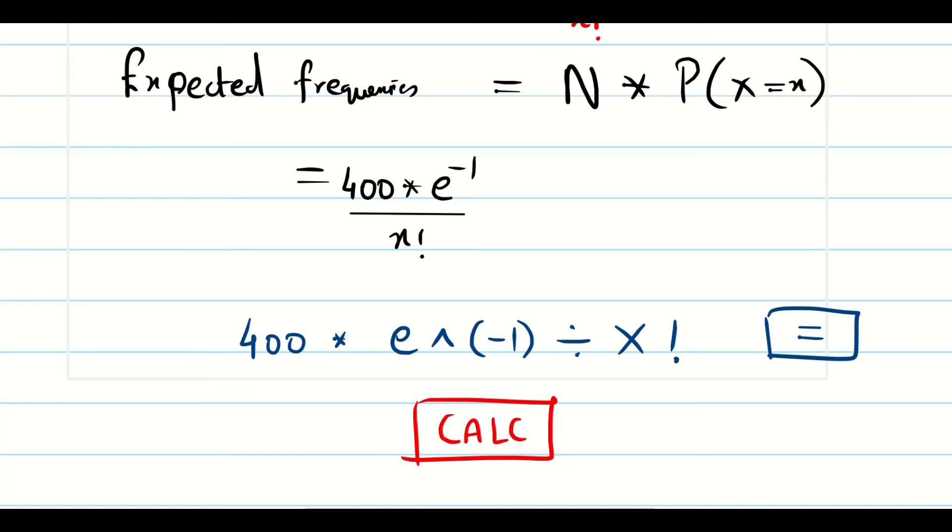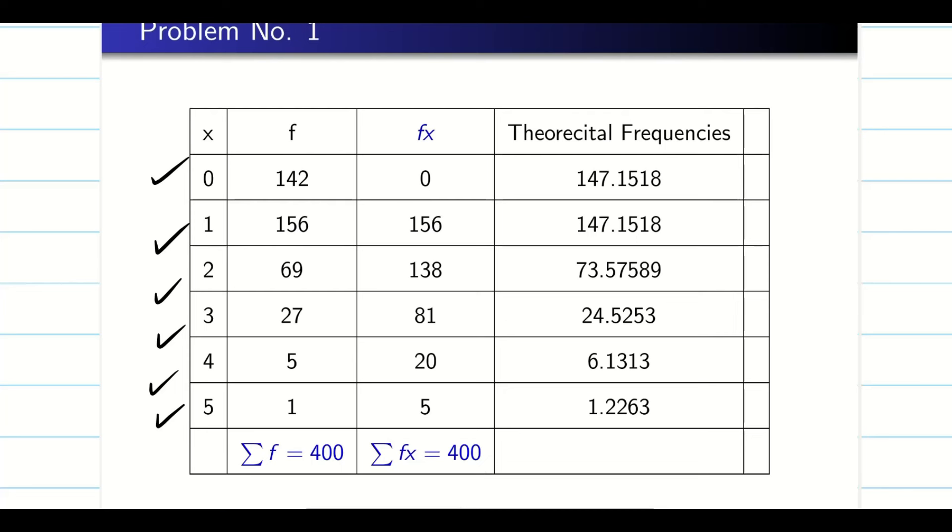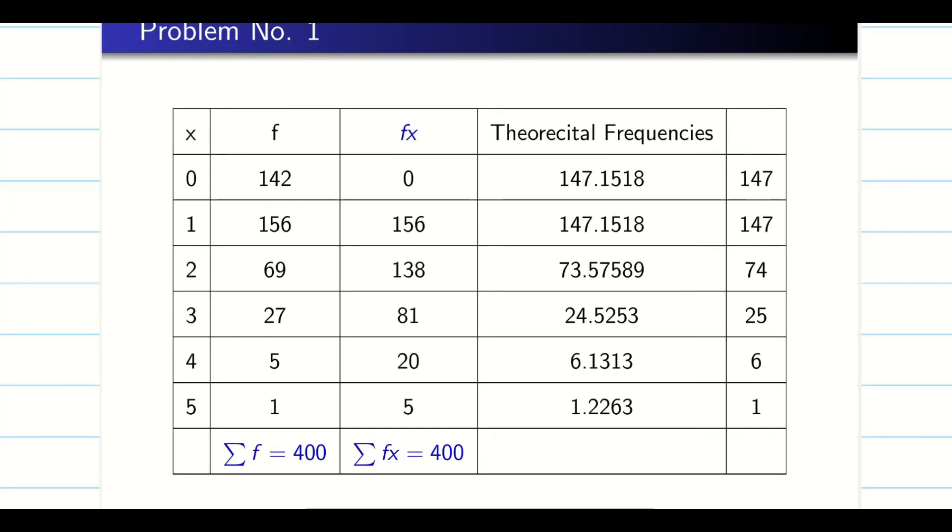Press calc. Then it will start asking the value as usual. So now you can finish this. Enter the values 0 to 5 one by one and enter the corresponding theoretical frequencies. As usual, the final step, what you do? You round off the frequency and you will finish the problem. So this is what the easiest way to fit a given data for binomial or Poisson distribution guys.